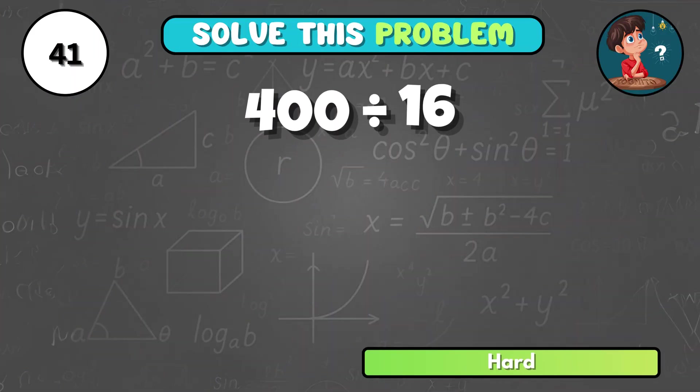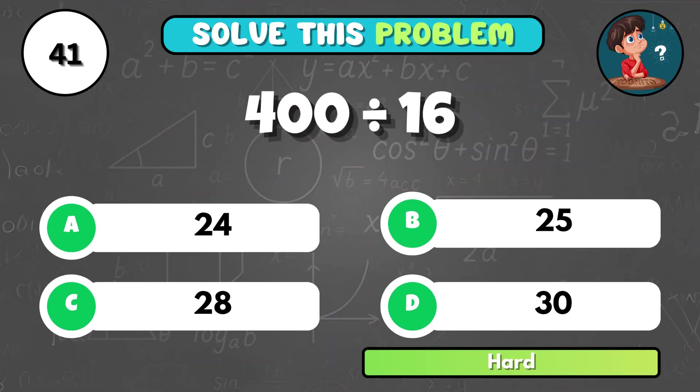How many groups of 16 are there in 400? It comes to B, 25.